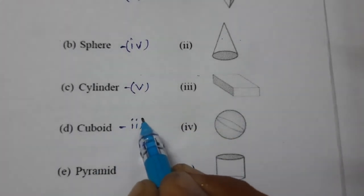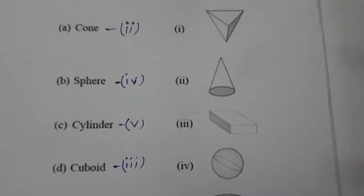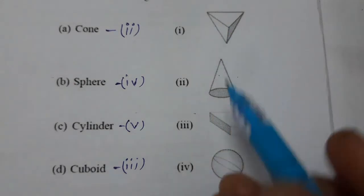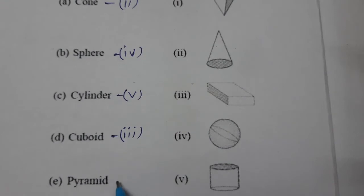Then comes pyramid. We have seen the first position, this is triangular pyramid, so first one is pyramid. Write pyramid is at first place.